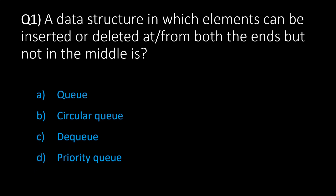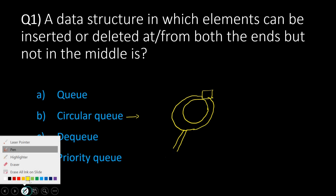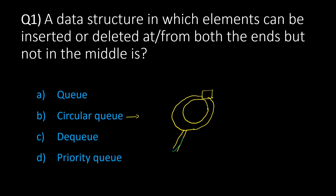The next one is a circular queue. In a circular queue, people go in line again after receiving service — like at a temple counter. Elements enter at one point, get processed, and then come back around to the same point. This circular movement is what gives it the name circular queue.